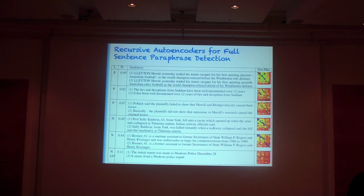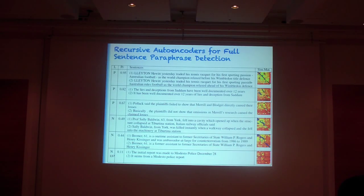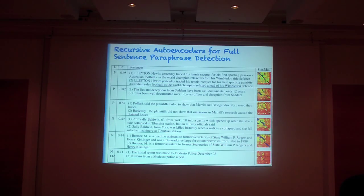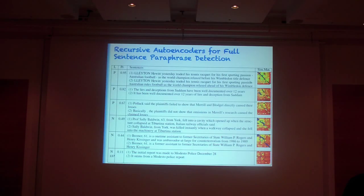Another interesting case: sometimes the similarity matrix has a gap. That gap indicates a missing chunk — in this example, the missing information is that Henry Kissinger was an ambassador at large for counterterrorism. If the second sentence is true, it doesn't necessarily mean the first is true, which breaks the mutual entailment and paraphrase relationship.